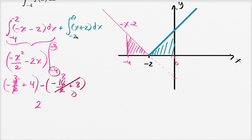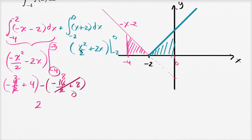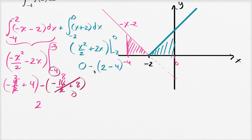For the blue integral, the antiderivative of x plus two is x squared over two plus two x. Evaluating at zero gives zero. Subtracting the evaluation at negative two: negative two squared over two is positive two, and plus two times negative two is minus four — so we subtract positive two minus four, which is negative two. The result is zero minus negative two, which is positive two. So what we have here in blue is also equal to two — there's a symmetry here.